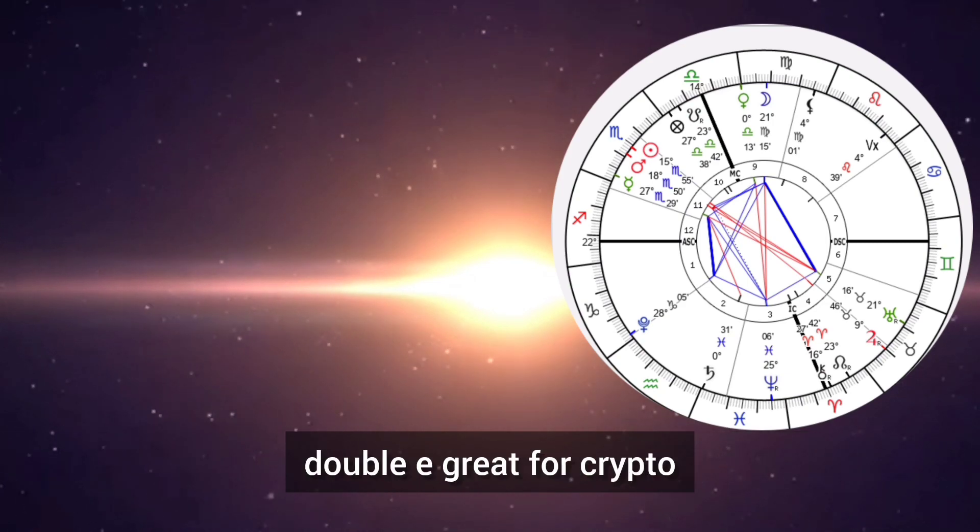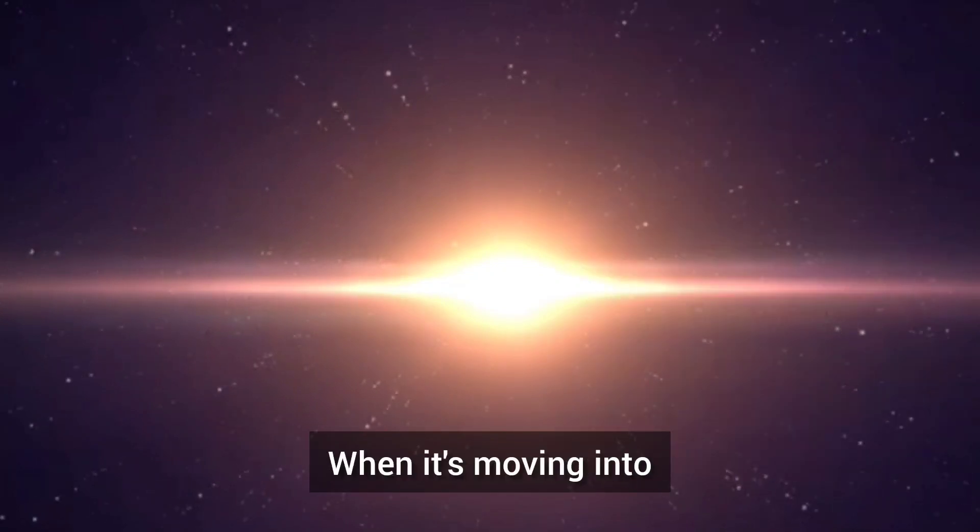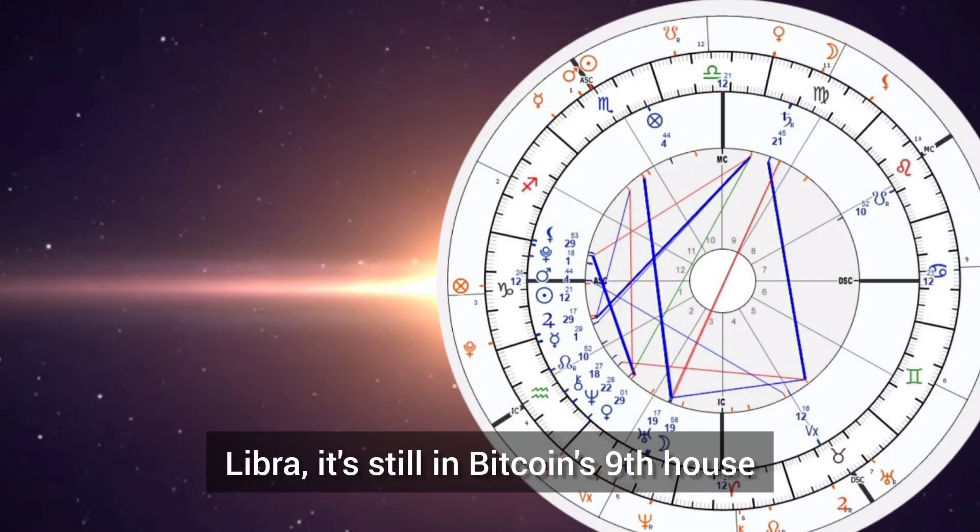Venus also rules Libra. Doubly great for crypto. When it's moving into Libra, it's still in Bitcoin's ninth house.